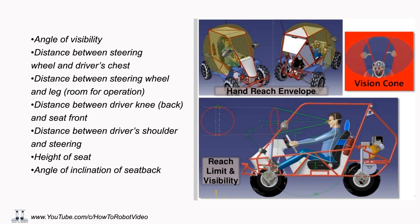Also record the distance between the driver's knee back part and the seat front, the distance between the driver's shoulder and the steering wheel, the height of the seat, and the angle of inclination of the seat back. This angle should be within the range given in the rulebook.